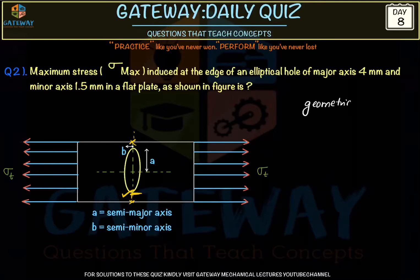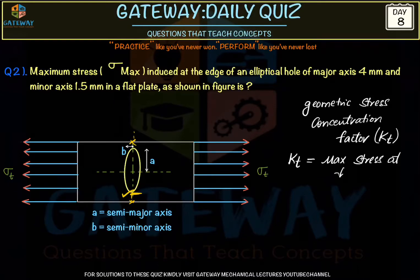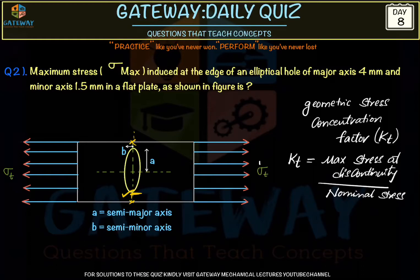The geometric stress concentration factor K_t accounts for the fact that the stress at a geometric discontinuity is not equal to the nominal stress at the minimum cross-section. K_t is defined as: maximum stress at the discontinuity divided by the nominal stress at the minimum cross-section.